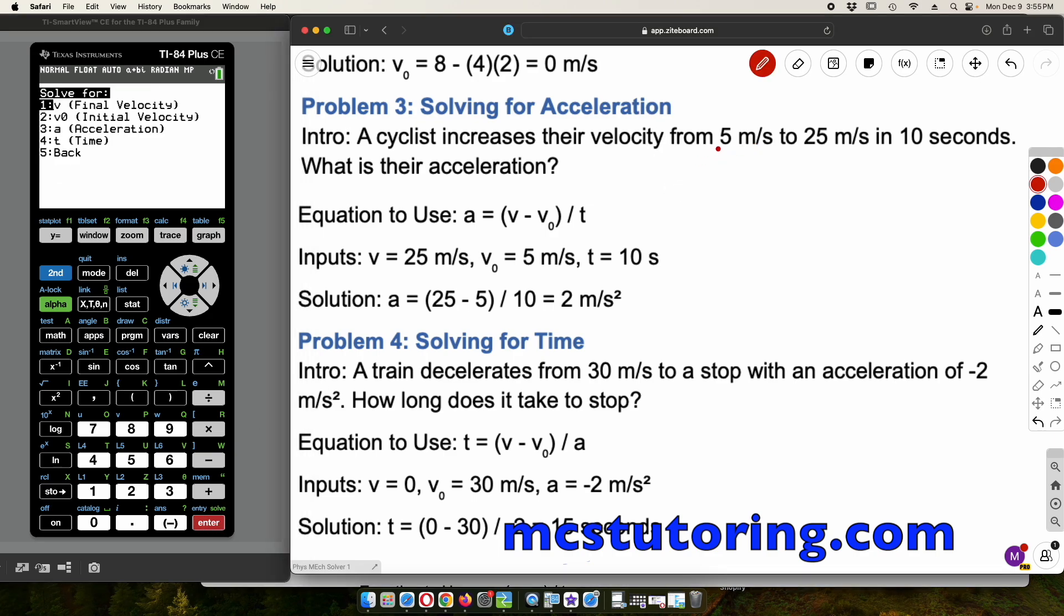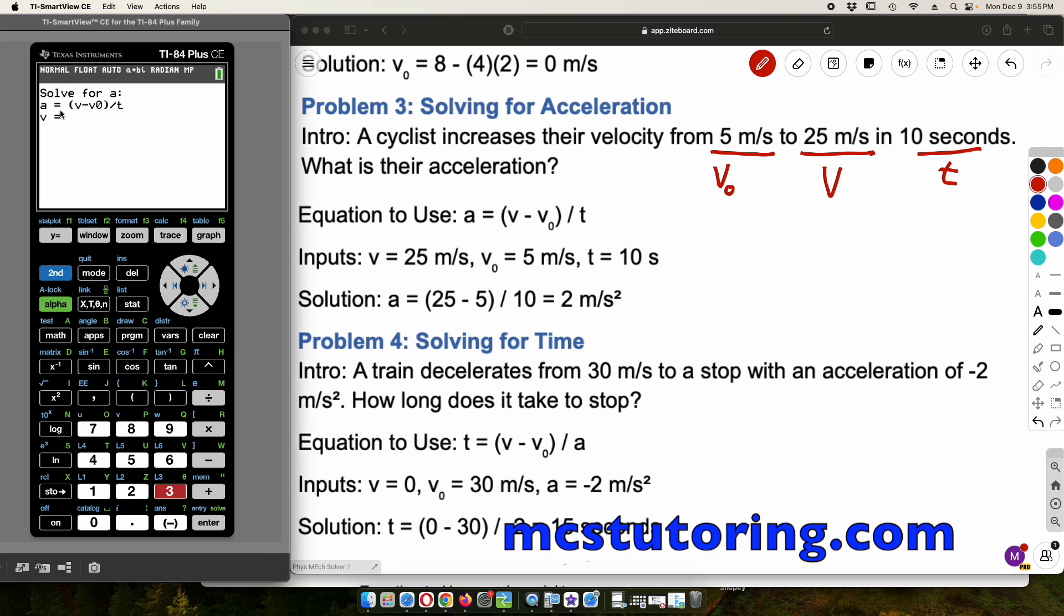We're going to increase velocity from 5 meters a second. That must be V0. And then to 25 meters a second. That's the velocity final, or we're just going to call it velocity here. 10 seconds is T. What's acceleration? So now we're looking for 3 acceleration there. And it rearranges the formula for you, which is just fantastic.